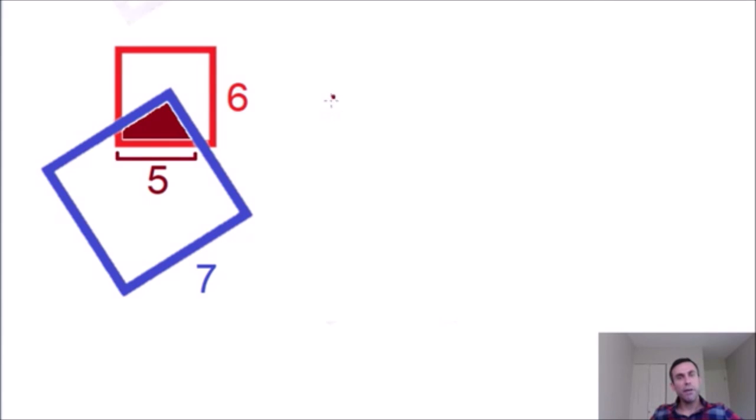So now we know that the area of the shaded region in dark red is equal to exactly one quarter of the area of the red square.